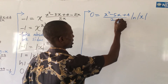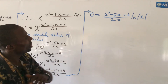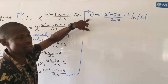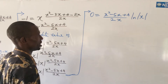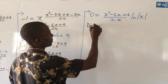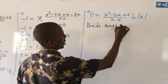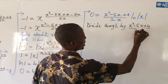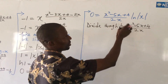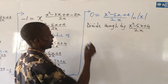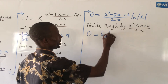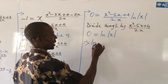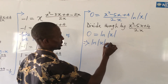So from here, we have 0 equal to x squared minus 5x plus 4, all over 2x, times ln of the absolute value of x. Since we have 0 on the left side and we are dividing by x squared minus 5x plus 4 all over 2x, the whole of this expression becomes 0, leaving us with 0 equal to ln of the absolute value of x. This implies that ln of the absolute value of x equals 0.